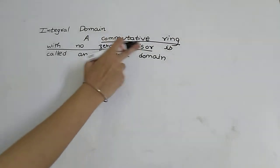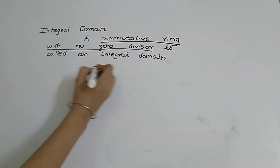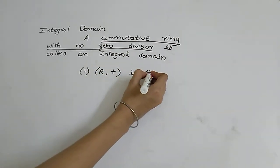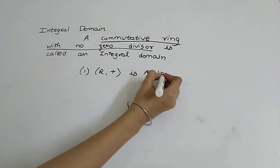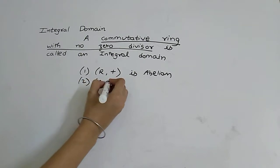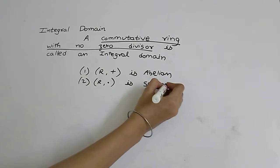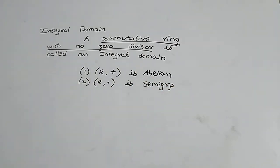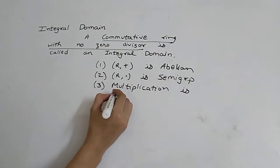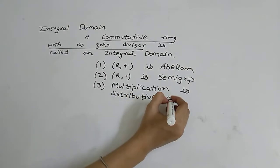So commutative ring with no zero divisor proof. First, R plus is abelian. Second, R dot is semigroup. Third, multiplication is distributive over addition.